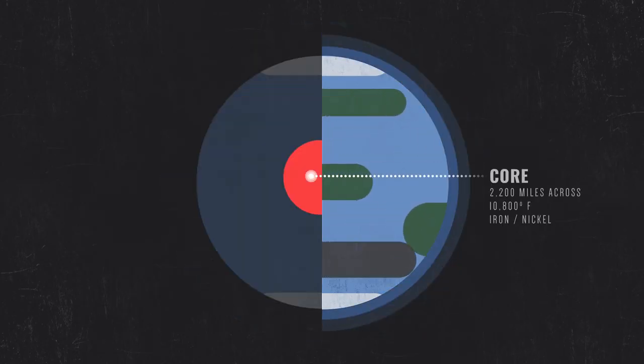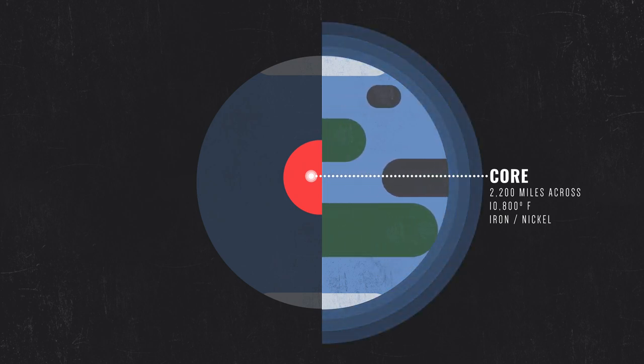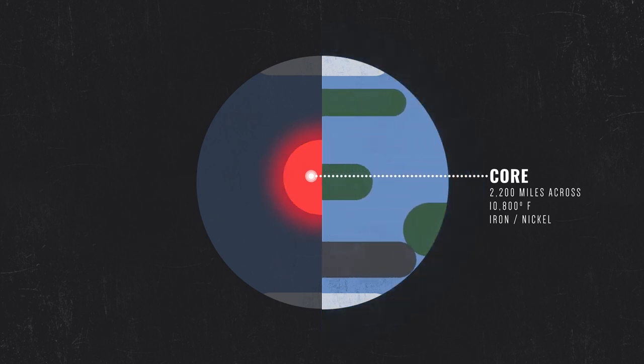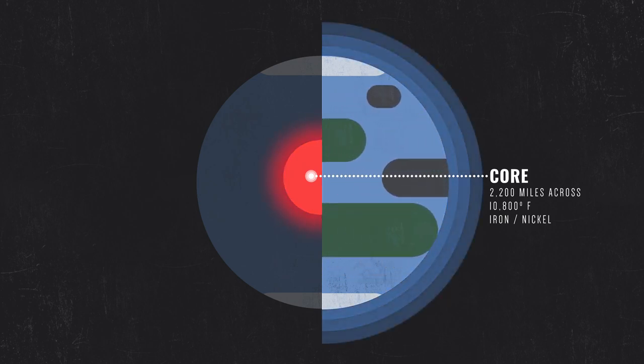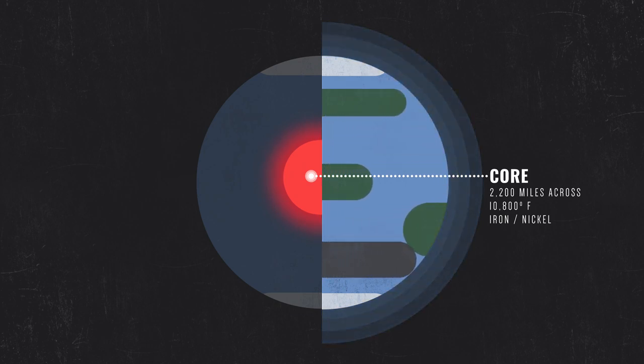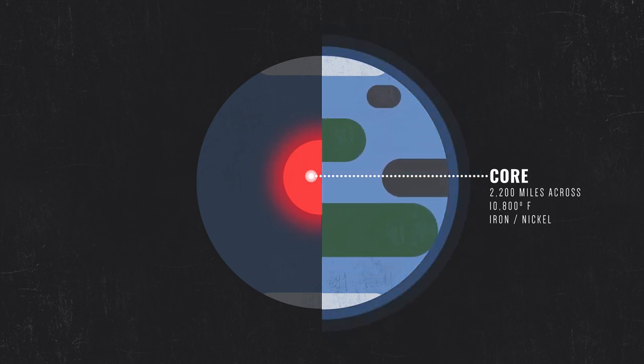Deep inside planet Earth is an 800-mile-wide solid inner core, followed by a 1,400-mile-wide liquid outer core, both made mostly of metals like iron and nickel in solid and liquid alloy forms.